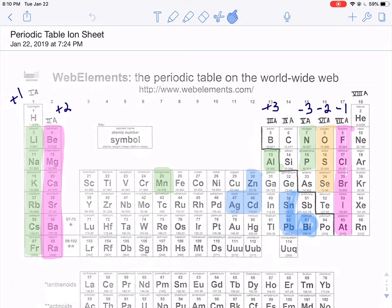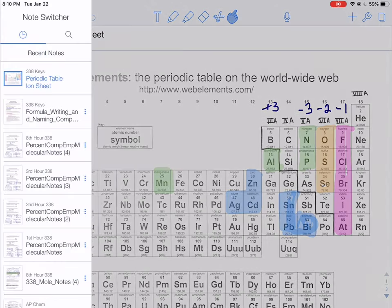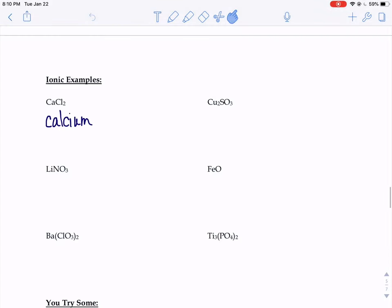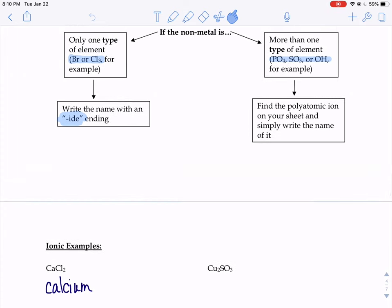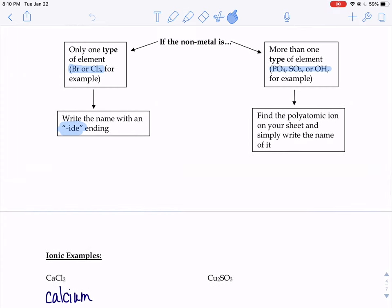So no Roman numeral is necessary in this name, because we know calcium is always plus 2. Now we go on to the non-metal portion. The non-metal portion, the decision you have to make there is, is it one type of element, or more than one type of element?